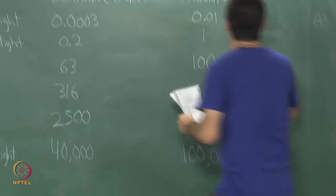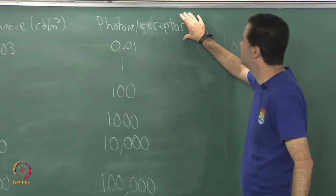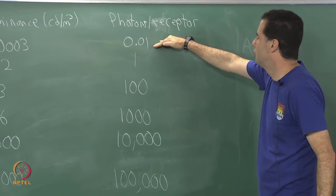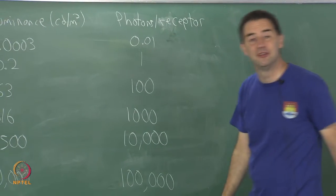That is quite a range when you look at it. I like this photons per receptor idea, this concept. I am going from 0.01 up to 100,000 per receptor.